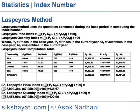The last row shows the respective sigma values — the total of each column. The Laspeyres price index = (sigma P1Q0 / sigma P0Q0) × 100 = 92990.30 / 67059.90 × 100. The Laspeyres quantity index = (sigma P0Q1 / sigma P0Q0) × 100 = 82454.90 / 67059.90 × 100 = 122.96.